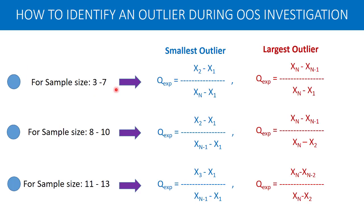For a sample size greater than 7, a different formula applies. For sample sizes 8 to 10, separate formulas are given for the smallest and largest outliers. If the sample size is greater than 10 — specifically 11 to 13 — yet another set of calculation formulas applies for both the smallest and largest outlier.